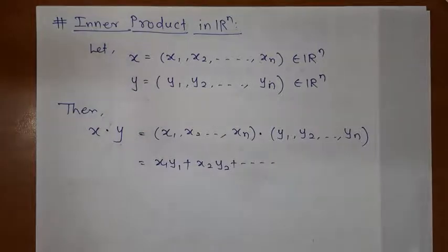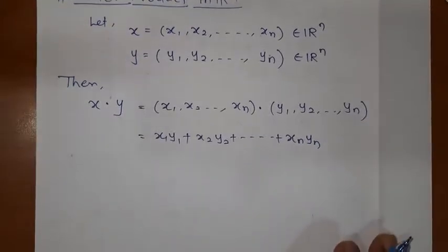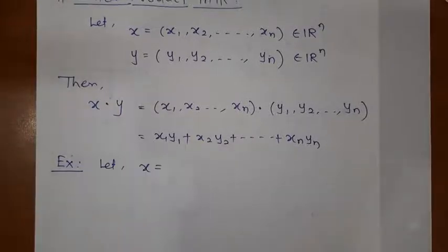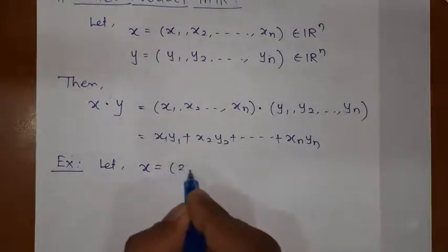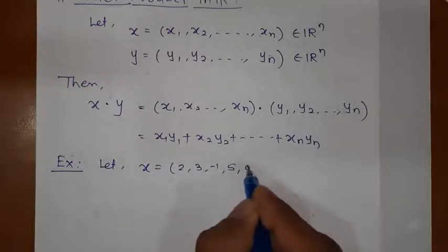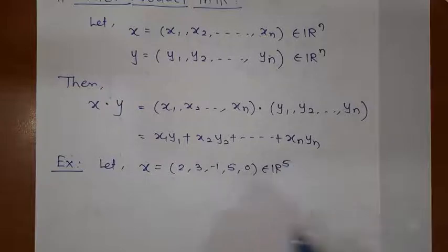Finally we will have Xn into Yn. Both elements should be elements of Rn. Let us see one example. Let us take two elements of R5. X is equal to 2, 3, minus 1, 5, 0. This is an element of R5 since five components are there.